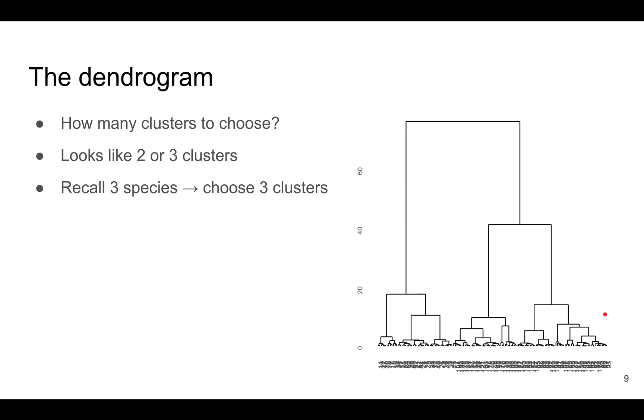Let's take a look at the dendrogram, which gives us some clues about how many clusters to choose. If you choose two clusters, that's quite a lot of separation between the two clusters. Or you could choose three, which is almost as much separation.